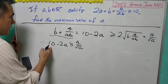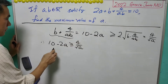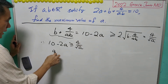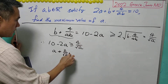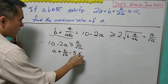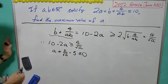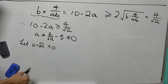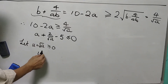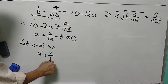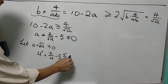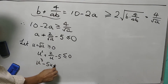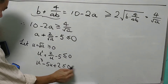We can divide each of the terms by 2, then move every term to the other side, giving us A plus 2 over the square root of A minus 5 less than or equal to 0. We let u equal the square root of A, where u is greater than or equal to 0. So A itself becomes u squared, and we get u cubed minus 5u plus 2 less than or equal to 0.